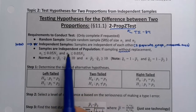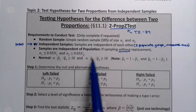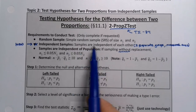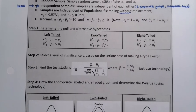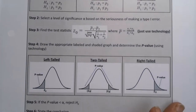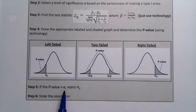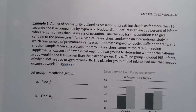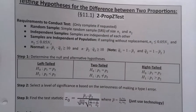Everything has to be done twice, and there's this new component. Then it looks a lot like before: we determine our null and alternative hypotheses, get our alpha, find a test statistic, draw a picture, make a decision based on our p-value, and state our conclusion. That entire table does not have to be memorized — it's right on your exam notes packet.